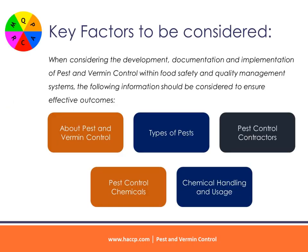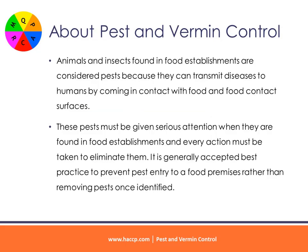Pest and Vermin Control Development. When considering the development, documentation and implementation of pest and vermin control within food safety and quality management systems, the following information should be considered to ensure effective outcomes: Types of Pests, Pest Control Contractors, Pest Control Chemicals, Chemical Handling and Usage.